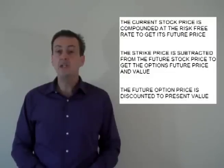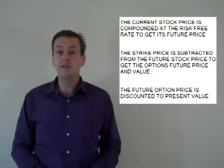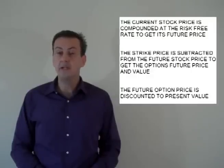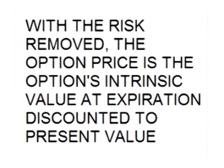To get the price of the option today, the option is discounted to present value by negatively compounding the future value by the risk-free rate. Notice again that with the risk removed, the price of the option is the intrinsic value of the option at expiration discounted to present value.